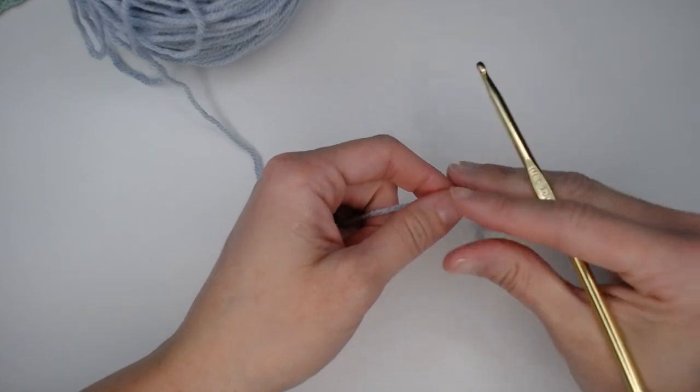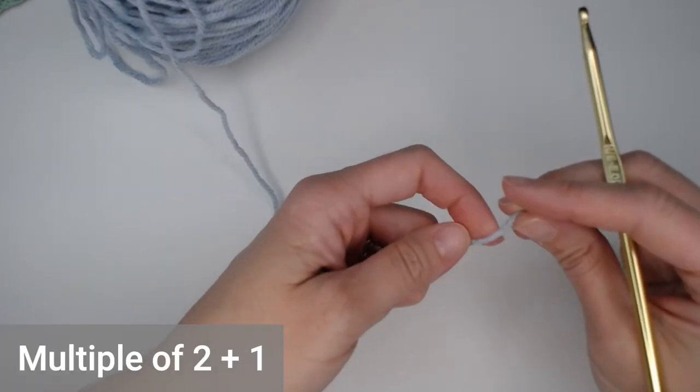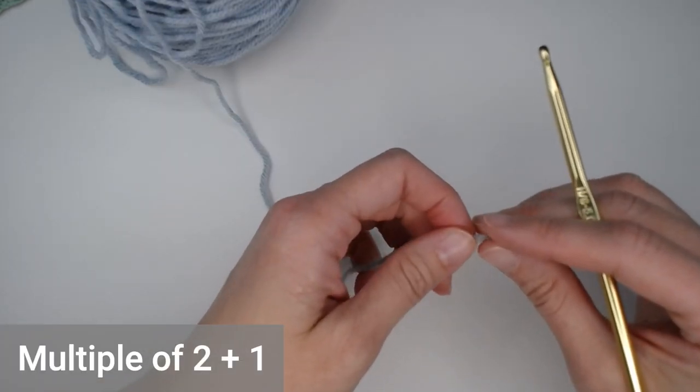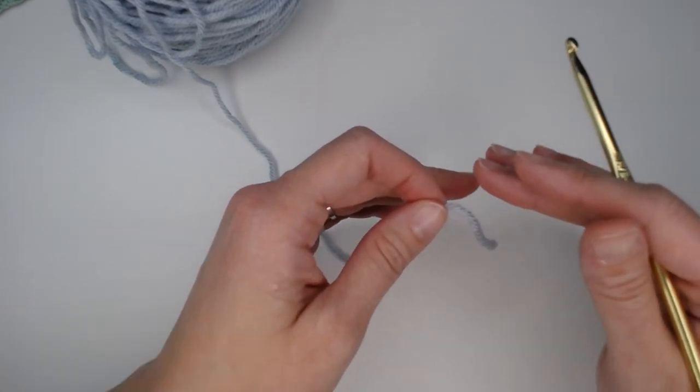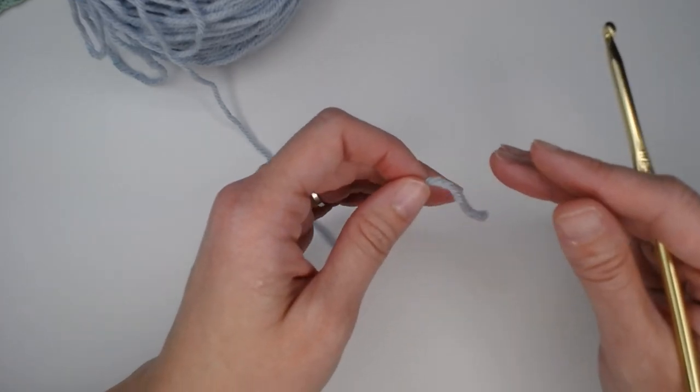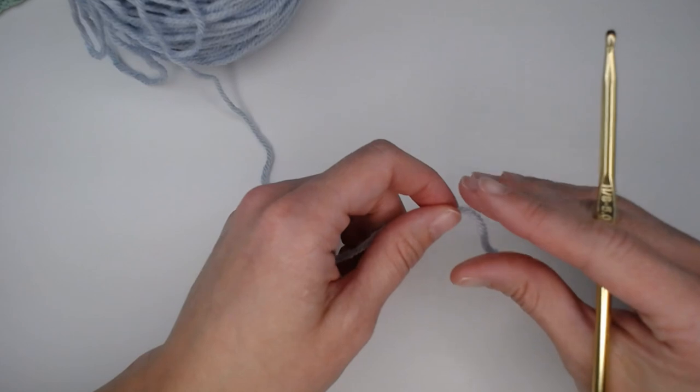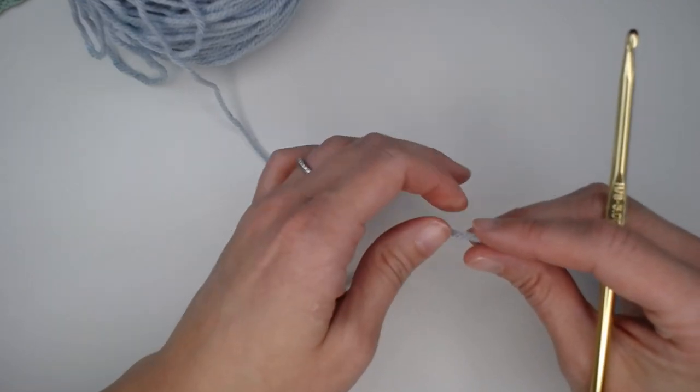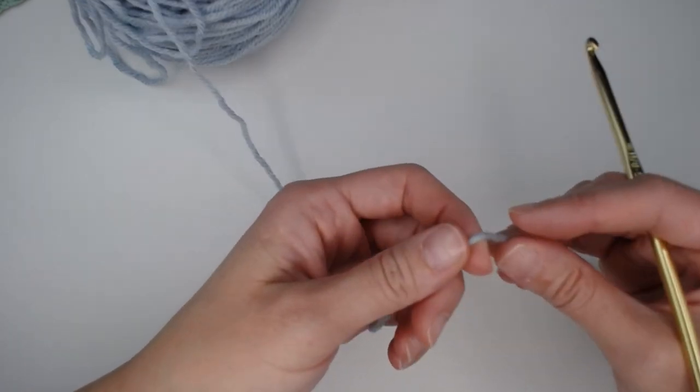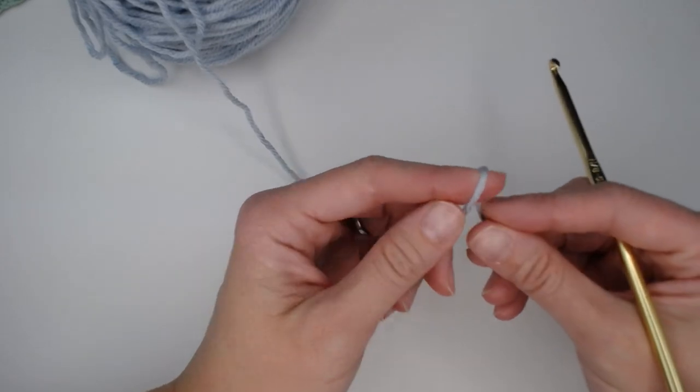Okay, so this double crochet v-stitch pattern is in a multiple of 2 plus 1. So, go ahead and calculate how many foundation row chains you would need in order to meet your blanket requirement. I'm just doing a quick example swatch for you so you know how to do the pattern. So, I'm going to do a chain of 21.